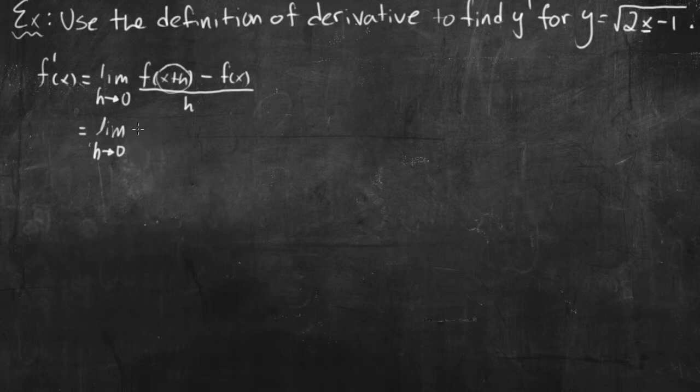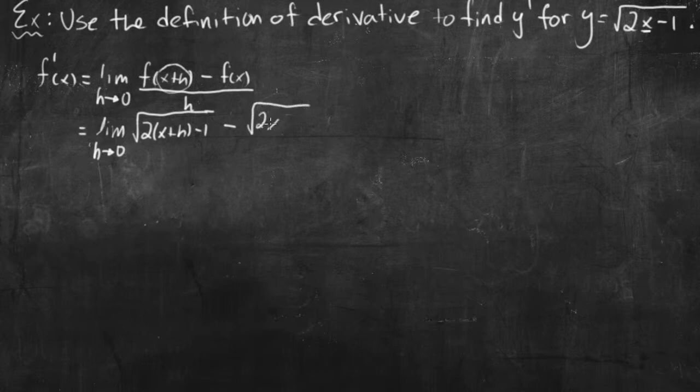So my function is square root of 2x minus 1. I need to plug in that x plus h where I see an x. So I have square root of 2 times x plus h minus 1, all underneath the square root. Make sure your square root extends all the way. And then minus our function, so square root of 2x minus 1, all over h.